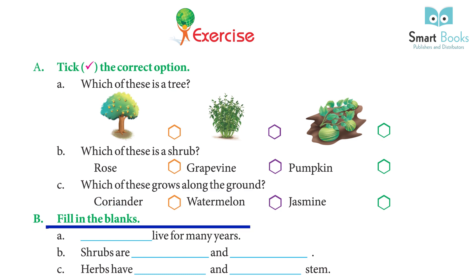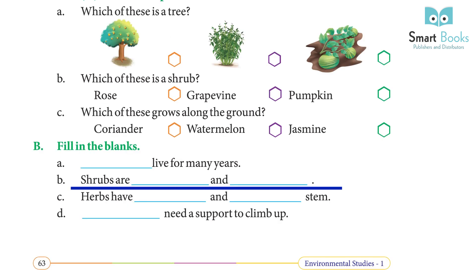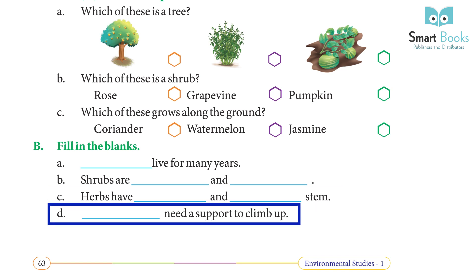Fill in the blanks. A: dash live for many years — answer: trees. B: shrubs are dash and dash — answer: short and bushy. C: herbs have dash and dash stem — answer: soft and green. D: dash need support to climb up — answer: climbers.